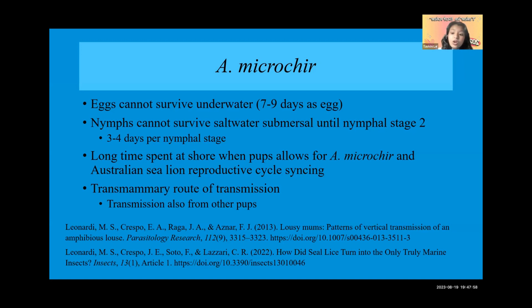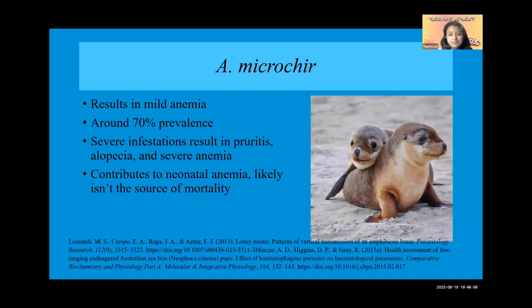This allows pups to be infected from birth. A. microchir is also passed to pups via lactation and from the gregariousness of other pups. A. microchir results in anemia similar to U. sanguinis; however, the anemia is much milder. There is around a 70% prevalence of A. microchir in the population.